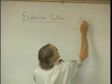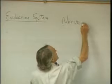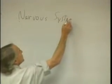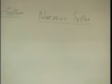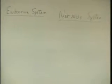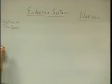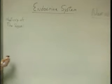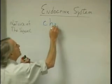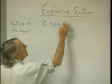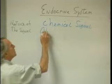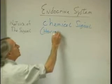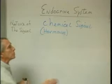Let's put the nervous system up here and compare the method of communication — the nature of the signal. With the endocrine system, the signal is a hormone. It's a chemical signal, and these hormones are secreted into the bloodstream.